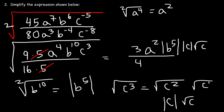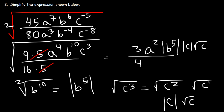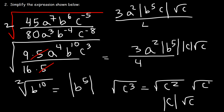So therefore, we can write the final answer like this: 3a squared b to the 5th times c root c over 4. And so that's it for this problem.